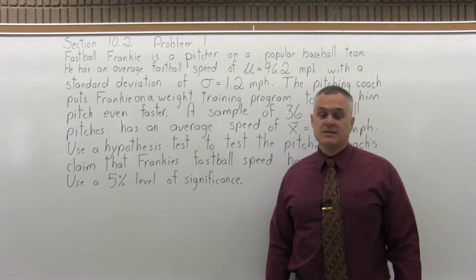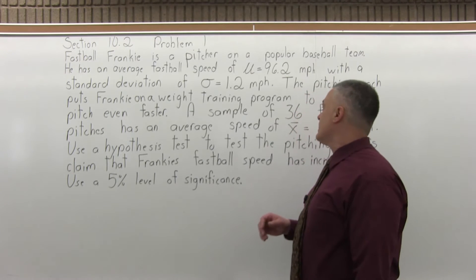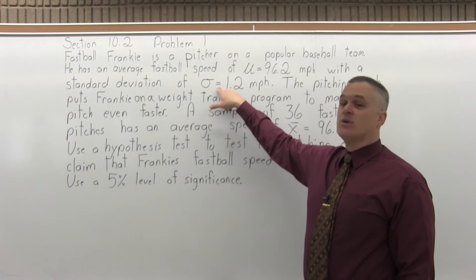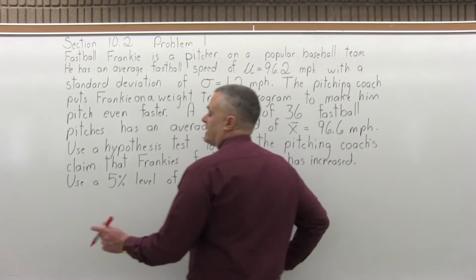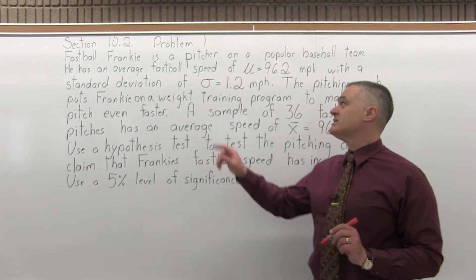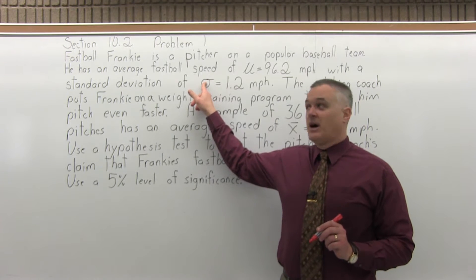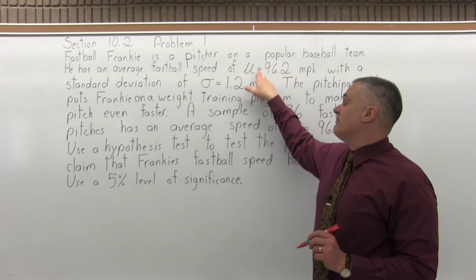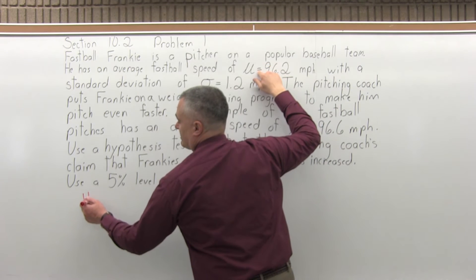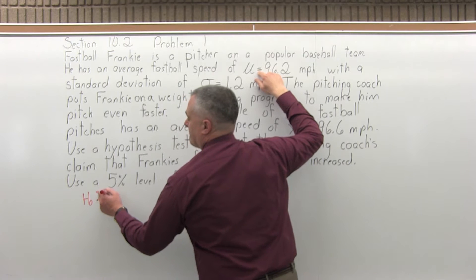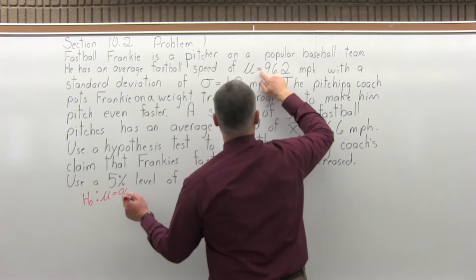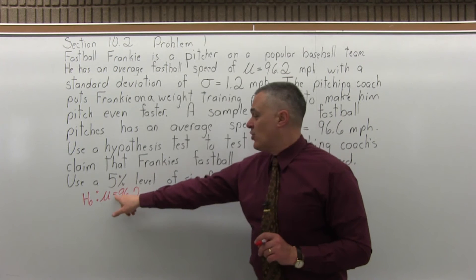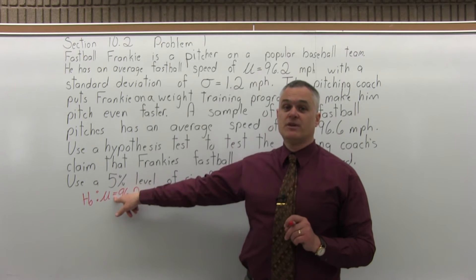This hypothesis test has a six-step process. In this type of test, we happen to know what the population standard deviation is. Sometimes you don't know and it's going to be a little bit different. Step one: state the null hypothesis. The null hypothesis will have information about mu, and it will contain the condition of equality. H sub 0: mu equals 96.2. The null always has equality in it — it could be greater than or equal to, but it will have equal to in it one way or the other.